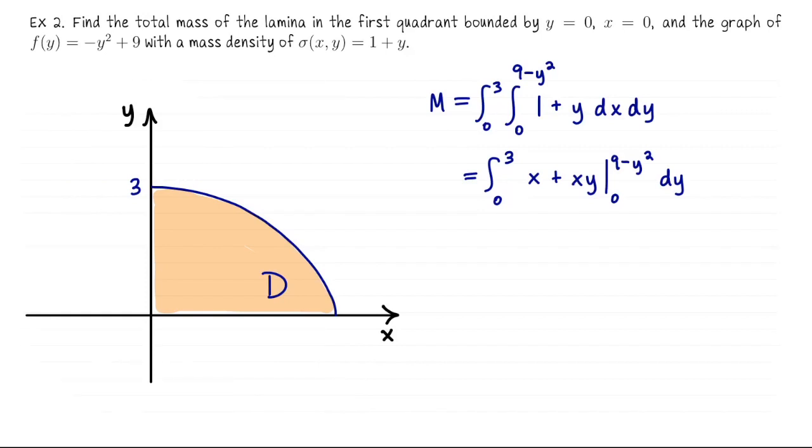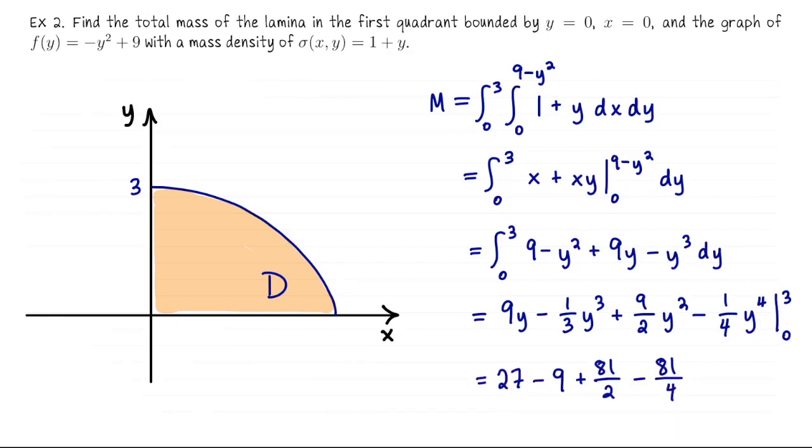At this point it's a routine double integration. We compute the antiderivative first with respect to x. Plug in our top and bottom bounds, we get the integral from 0 to 3 of 9 minus y squared plus 9y minus y cubed dy. Now it's a single integral with respect to y. Anti-differentiate again and we're left with this. Just go ahead and plug in 3. This would be the total mass of this lamina.